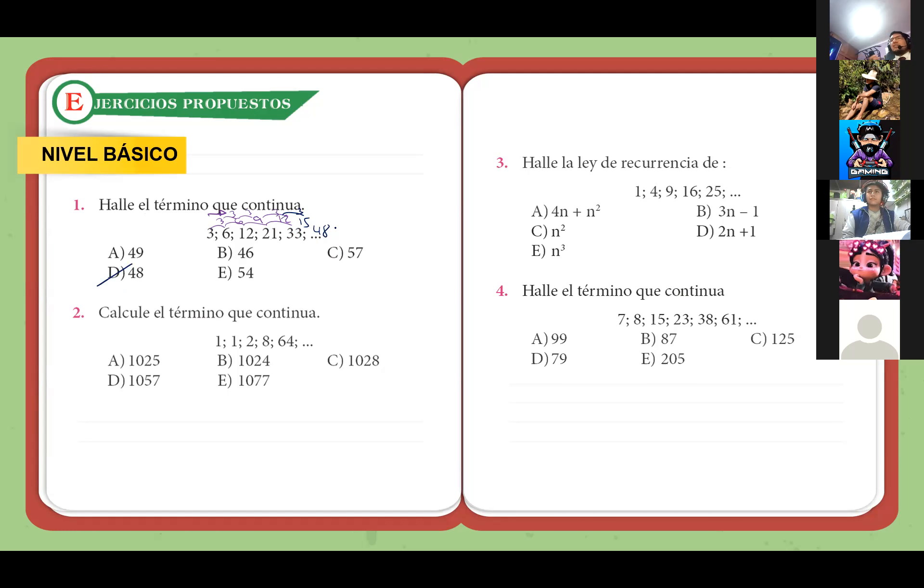¿Para qué complicarnos más haciendo las combinatorias y todo eso? Si nos piden solamente el término que continúa. Si nos pidieran el término 50, 30, 40, entonces, ahí sí necesitamos utilizar las combinatorias para hallar el término general. ¿Ya? Ya, entonces, aplíquenlo cuando sea necesario. Ya. Muy bien, entonces, ahí quienes me habían dado respuesta correcta era Corilla y Santos. Listo, ya tienen 4, les falta una participación nada más. Bien.